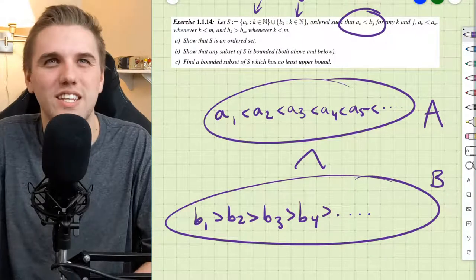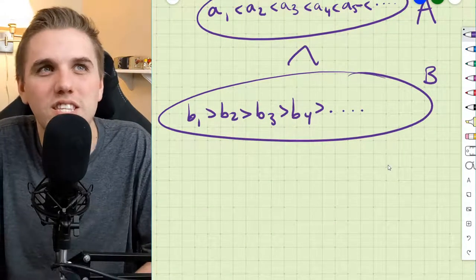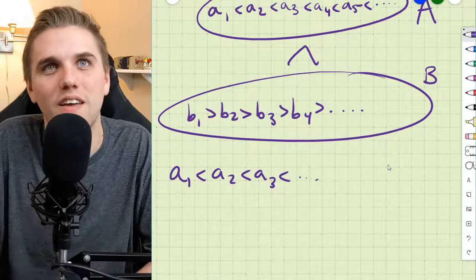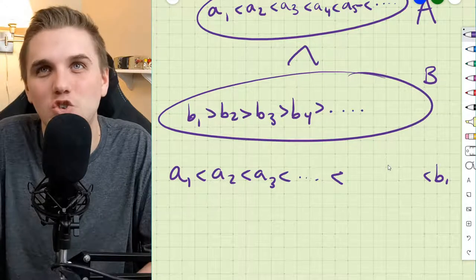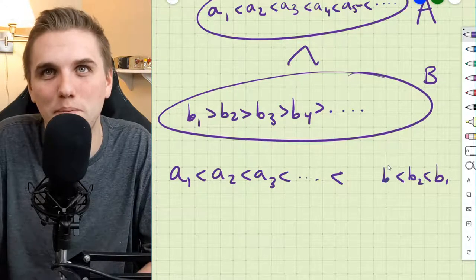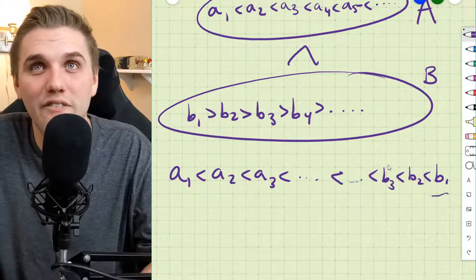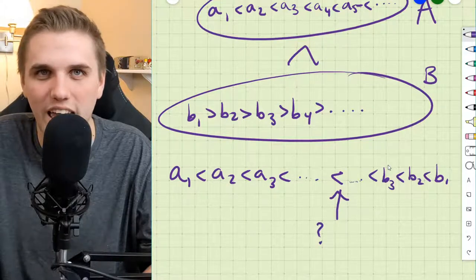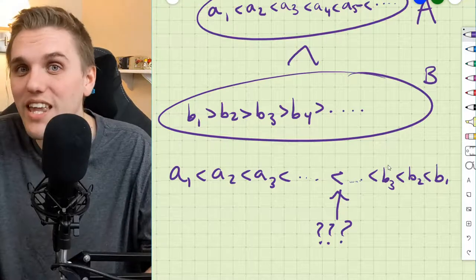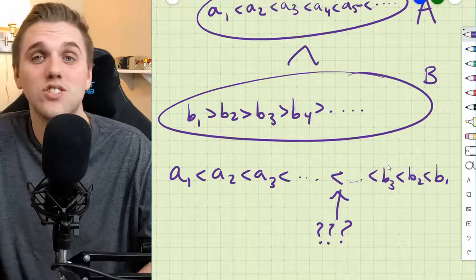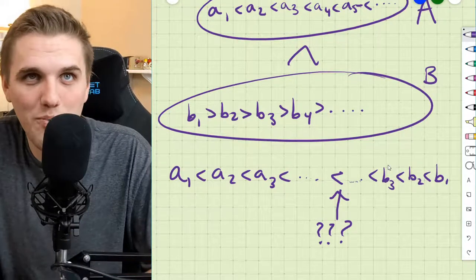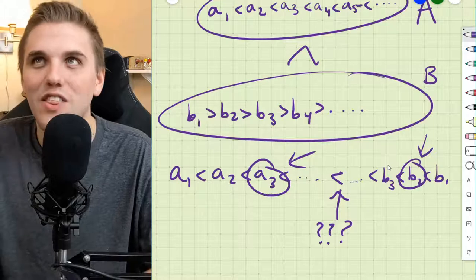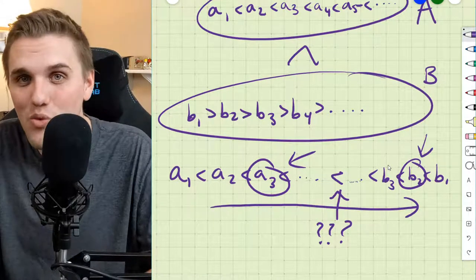So this looks a bit unusual. Maybe I can write this in a different way. I noticed this can be written as a1 is less than a2 is less than a3, and so on. And over here, we have b1 is greater than b2 is greater than b3, and so on. Every element in B is greater than every element in A. This does make it pretty easy to see that this set is totally ordered. If I pick any two elements, I know that one of them is going to be greater than the other based on which one is furthest to the right — the further you are to the right, the larger you are in this total ordering.